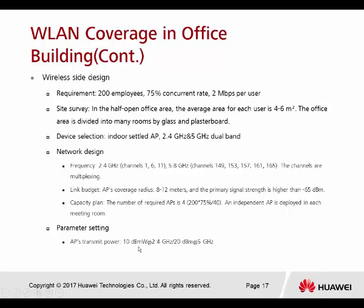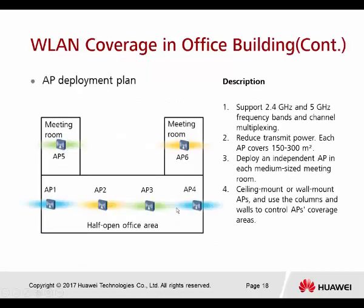AP transmit power: 10 dBm at 2.4 GHz and 20 dBm at 5 GHz. The configuration supports 2.4 and 5 GHz frequency bands with channel multiplexing. Reduce transmit power so each AP covers 150 to 300 square meters. Deploy an independent AP in each medium-sized meeting room, use ceiling mount or wall mount, and use columns and walls to control AP coverage area.